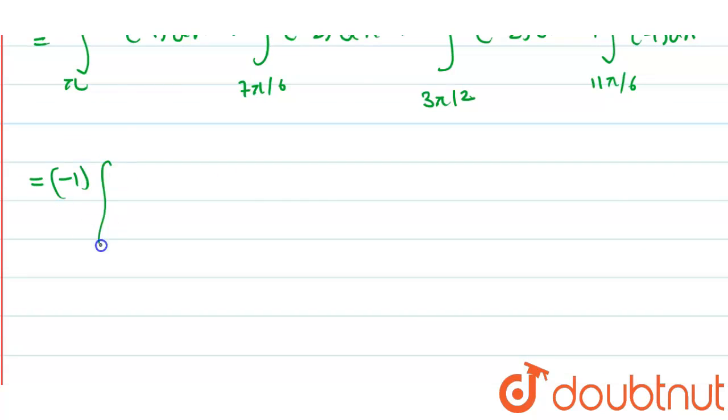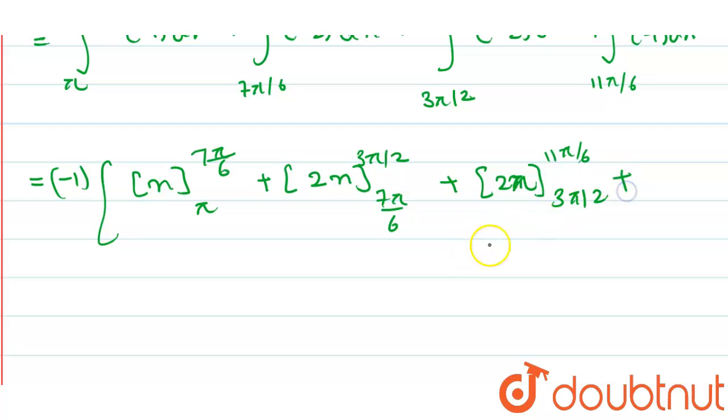So further we are going to solve this. So we get minus 1 times x from pi to 7 pi by 6, plus 2x from 7 pi by 6 to 3 pi by 2, plus 2x from 3 pi by 2 to 11 pi by 6.